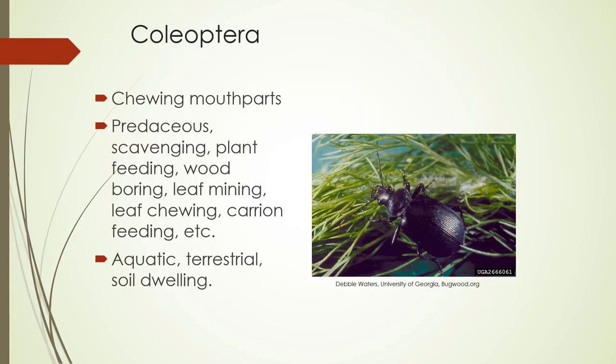They have chewing mouth parts. They're predacious, scavenging, plant feeding, wood boring, leaf mining, leaf chewing, and carry-on feeding. They can live in aquatic, terrestrial, and soil-dwelling conditions.